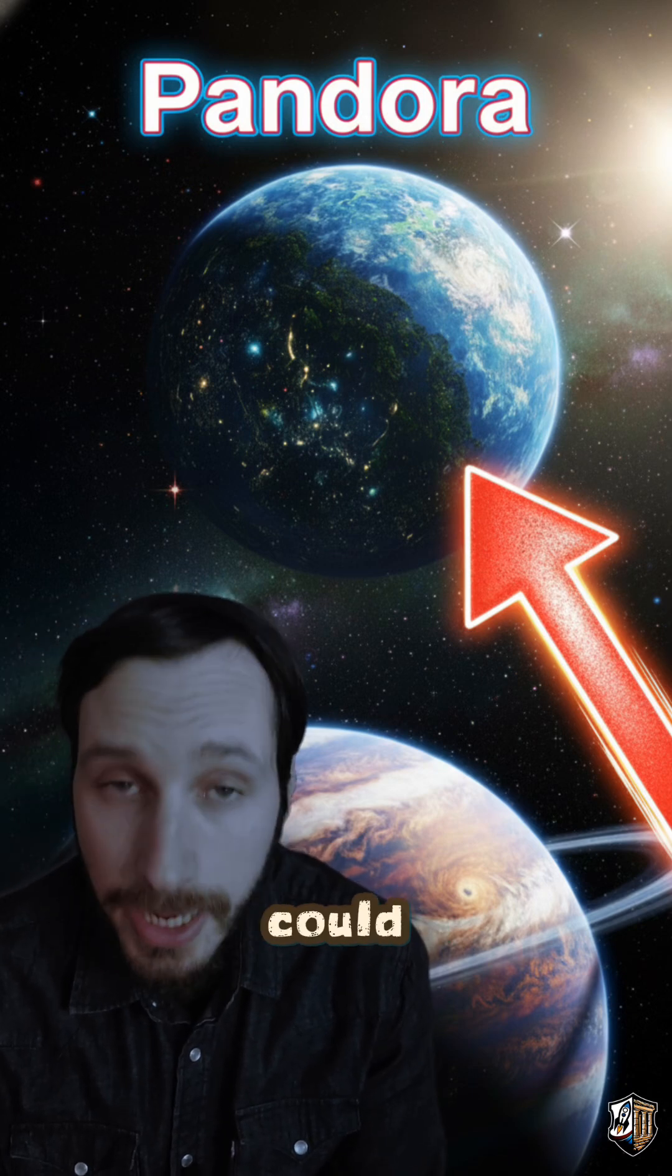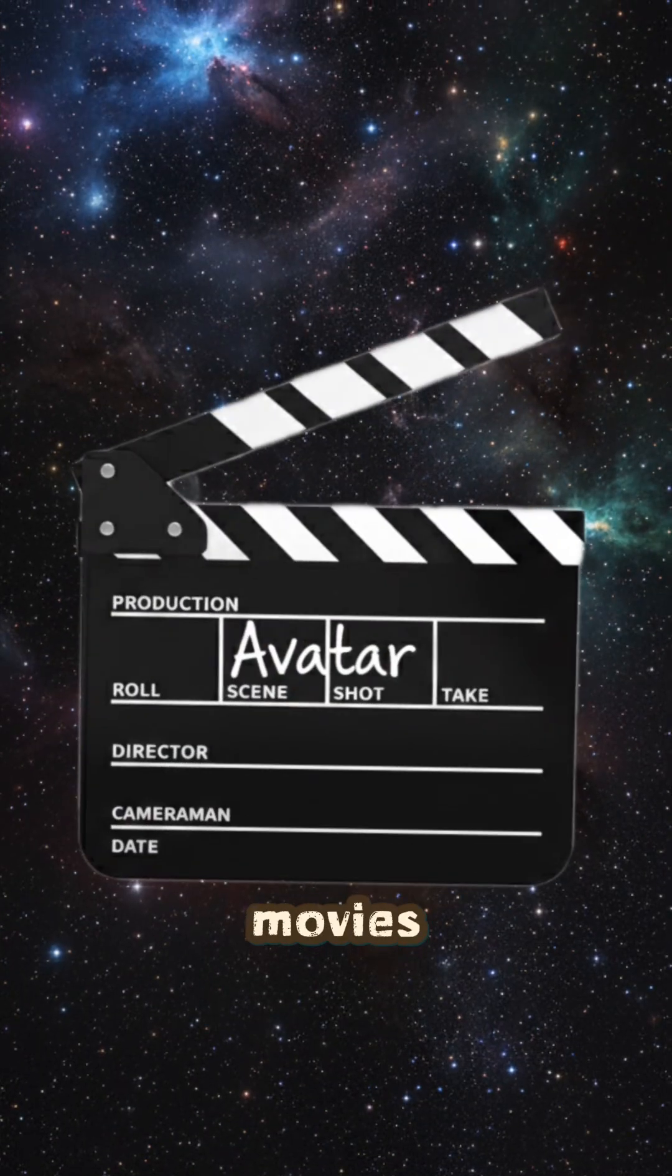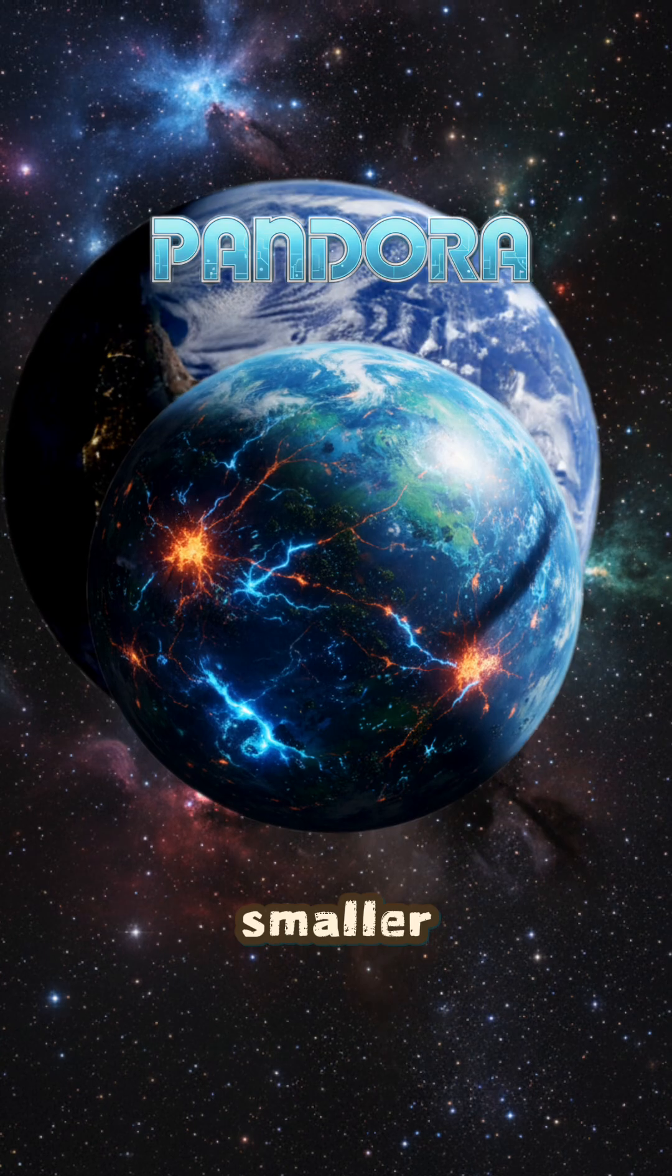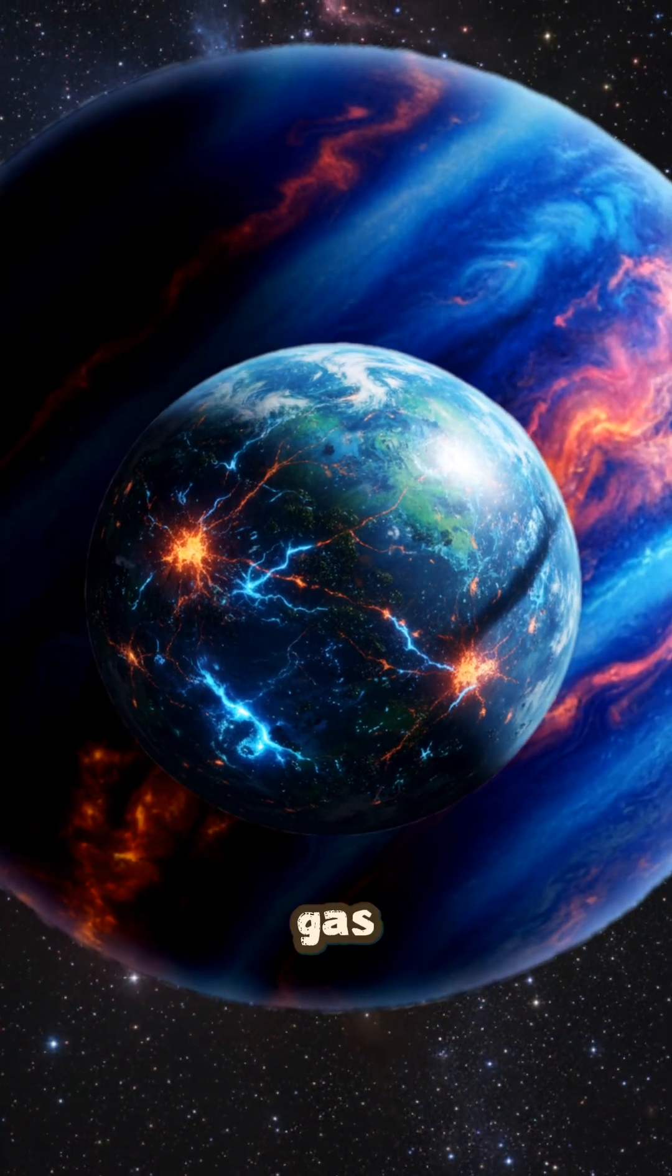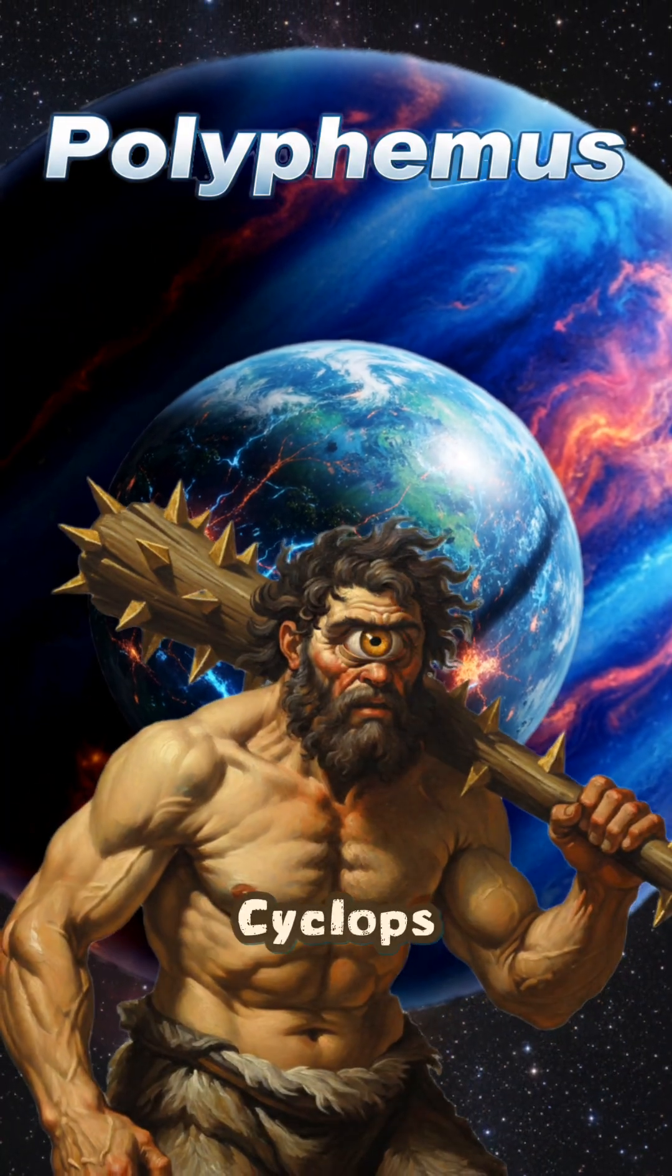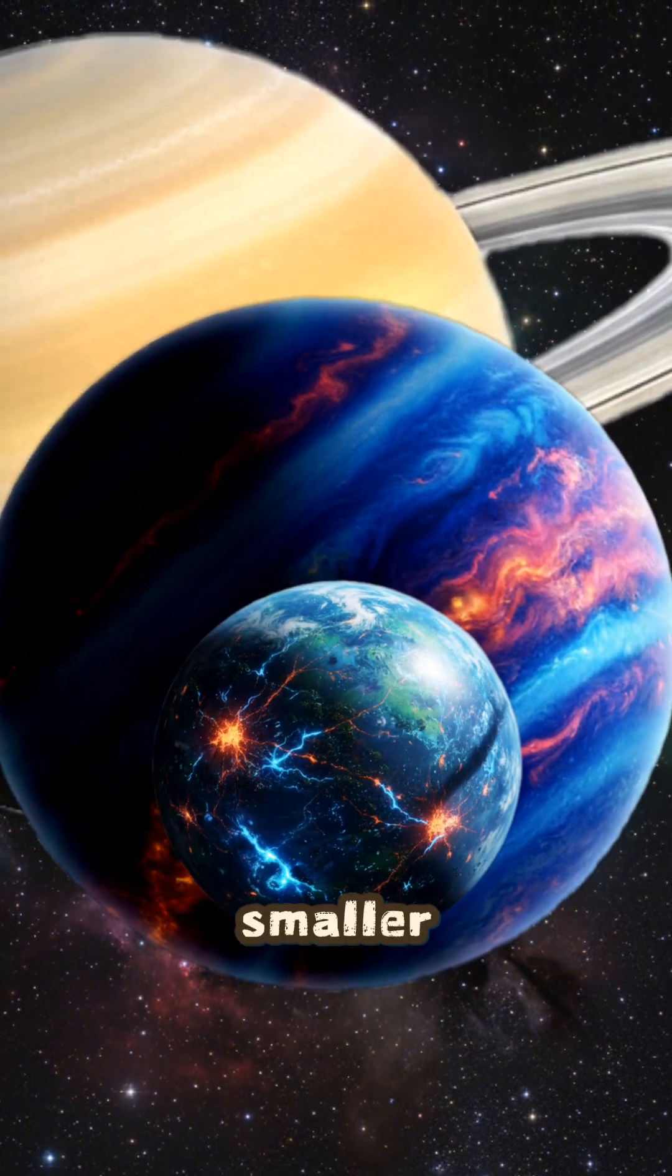Did you know that Pandora from Avatar could actually be real? In the movies, it is depicted as a moon slightly smaller than Earth, orbiting a large gas giant named Polyphemus after a mythological cyclops, which is just slightly smaller than Saturn.